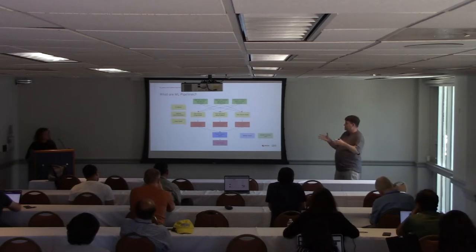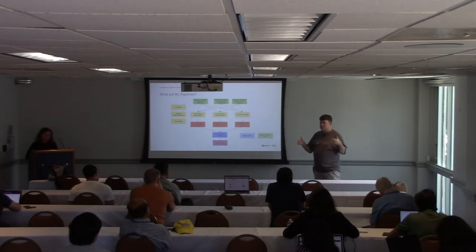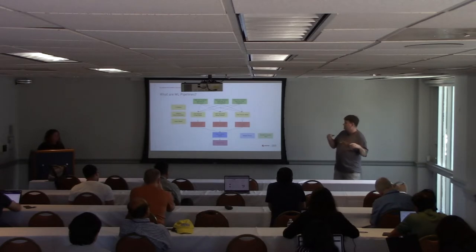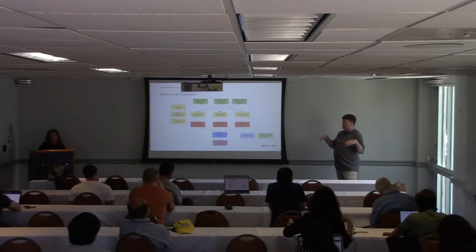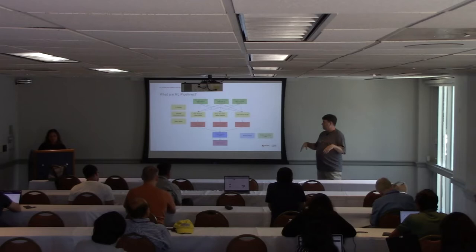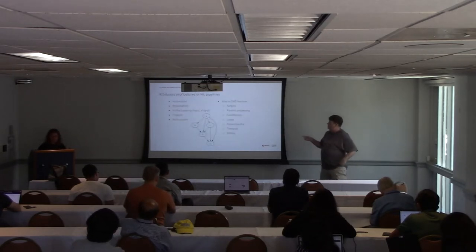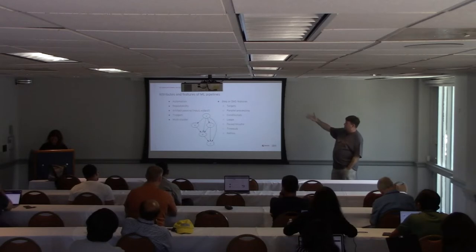This can be executed in many cases in parallel. Companies that are very advanced in machine learning — think Uber, Lyft, Google — actually do this in production. They have sophisticated machine learning pipelines for exactly this type of work. Taking a step back, we can look at the attributes and features of machine learning pipelines.